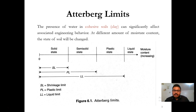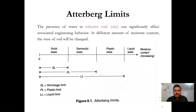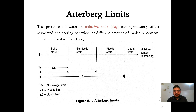The liquid limit is that water content at which the soil will start to behave as a liquid from the plastic state. The plastic limit is that water content at which the soil would start behaving like plastic. The shrinkage limit is in between the solid state and semi-solid state.